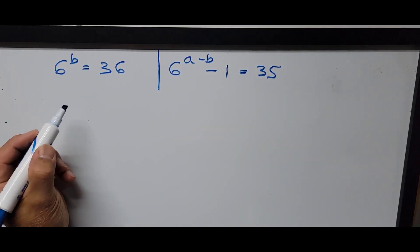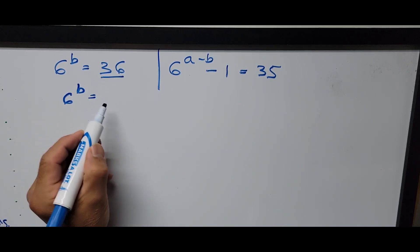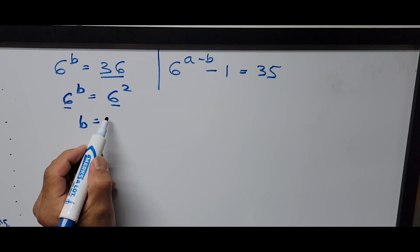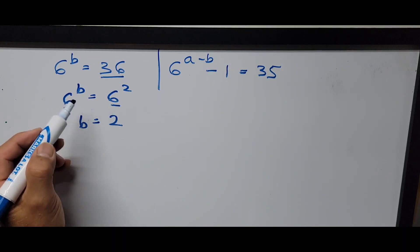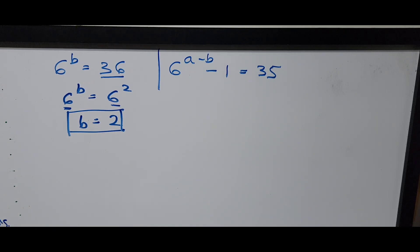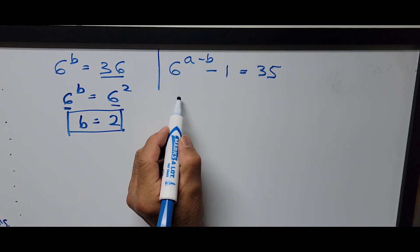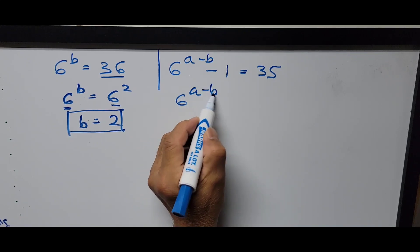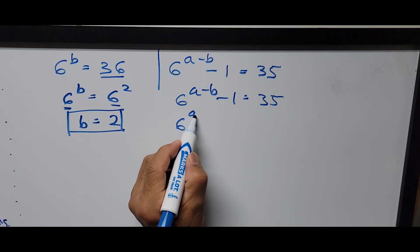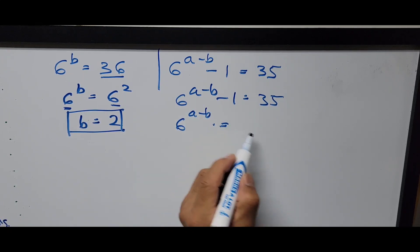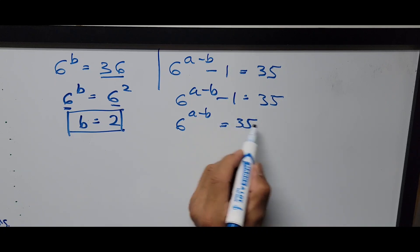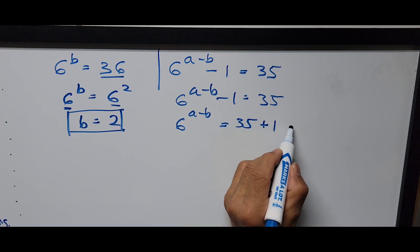From 6 to the power B equals 36, written as 6 squared, since we have the same base, B equals 2. On the other side, 6 to the power A minus B minus 1 equals 35. Transposing the negative 1 to the right side gives us 6 to the power A minus B equals 36.